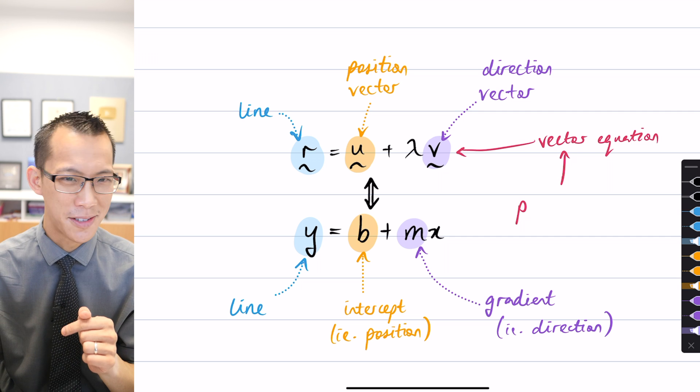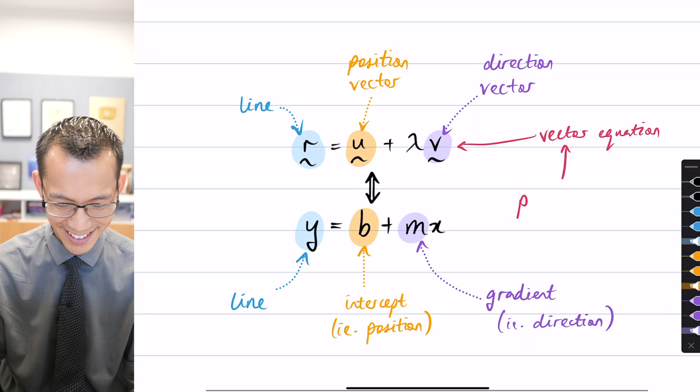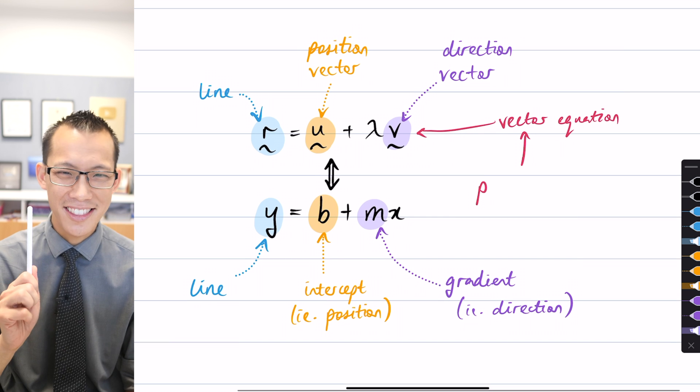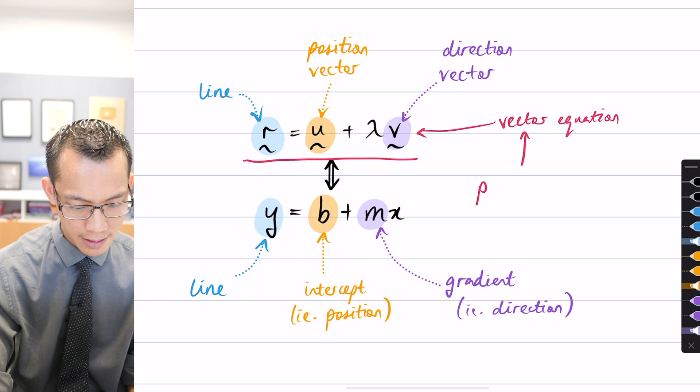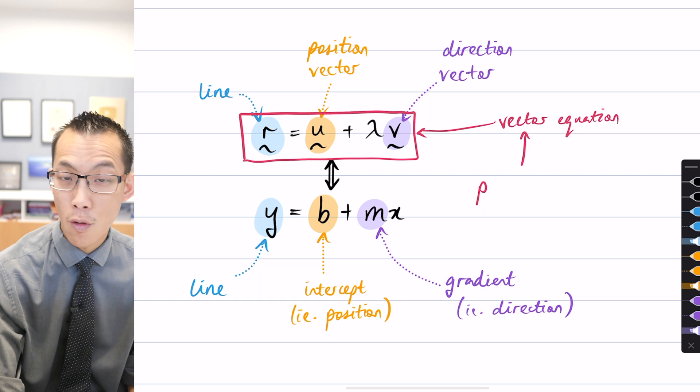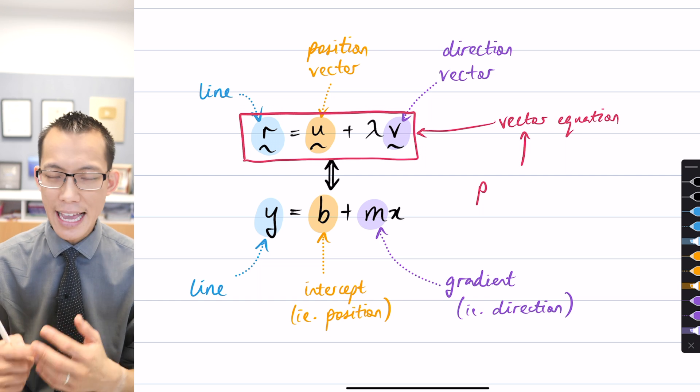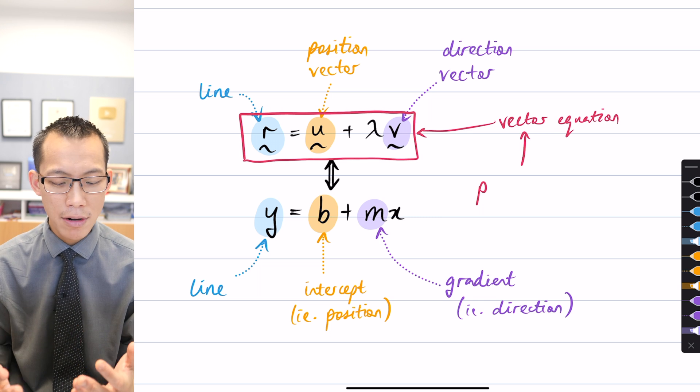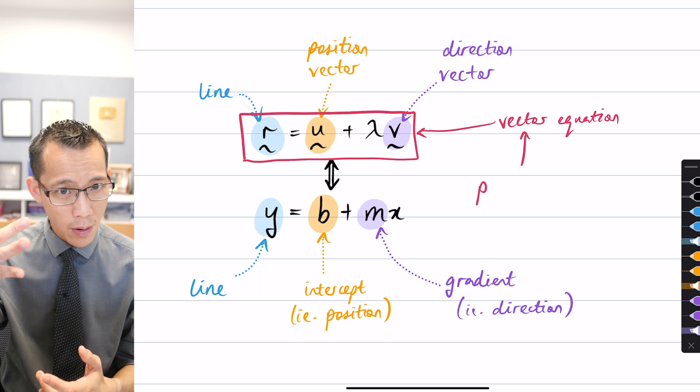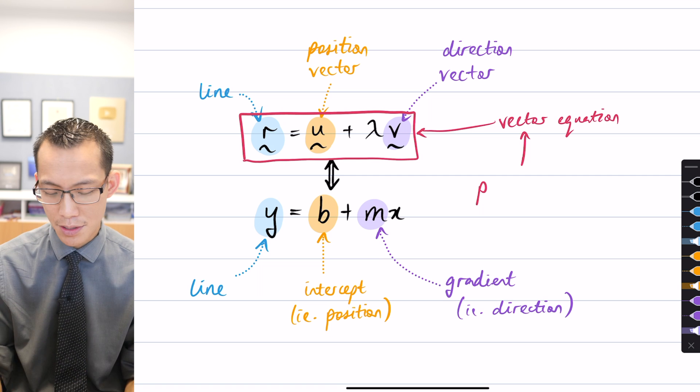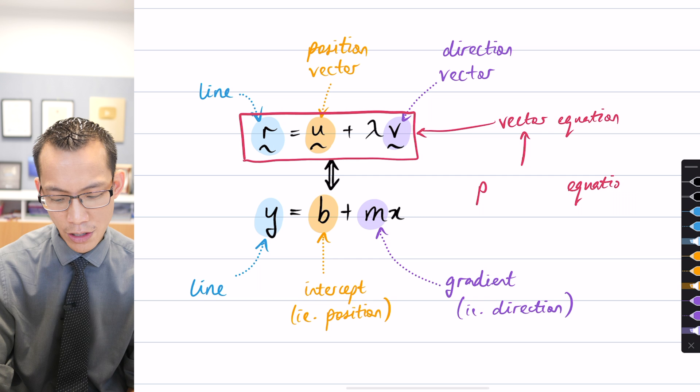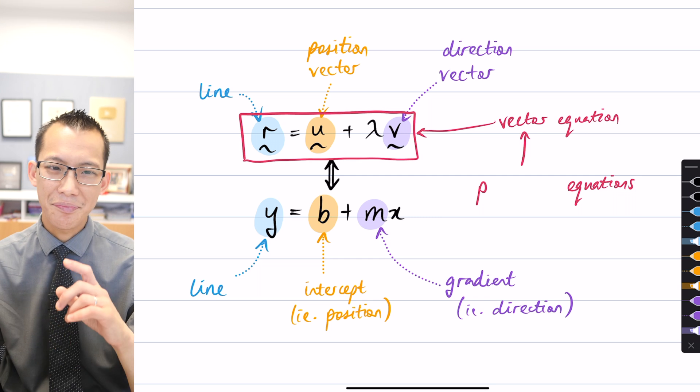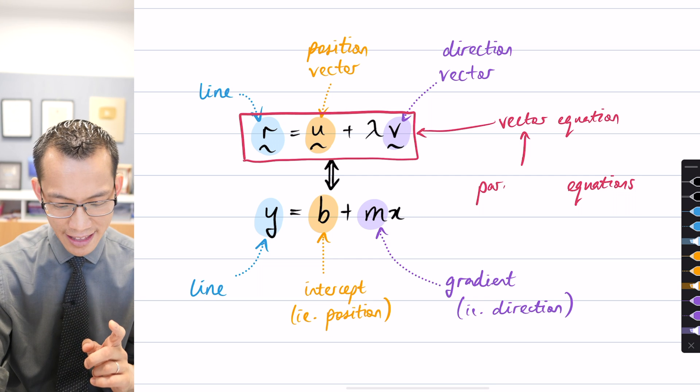The question was: the vector equation, which you can see here, is actually shorthand—an abbreviation for three separate equations. We gave them names, we called them the something equations, and it started with a p. Weird word we don't use very much. Yeah, very good, thank you Mrs. Isles.